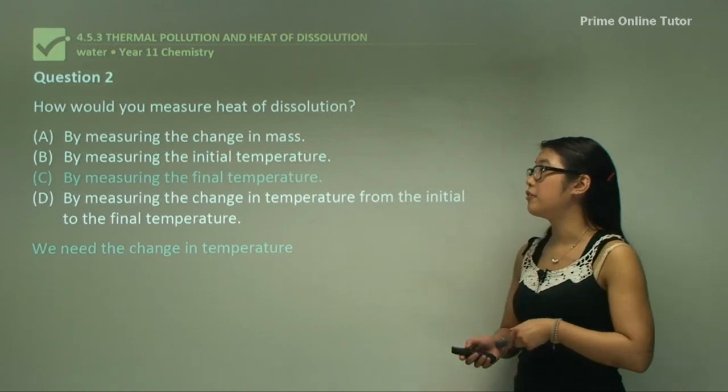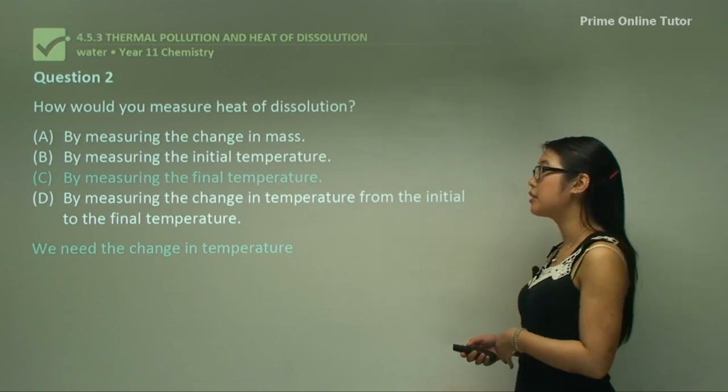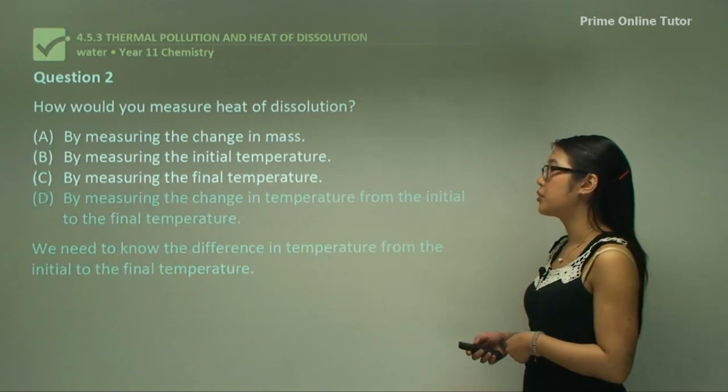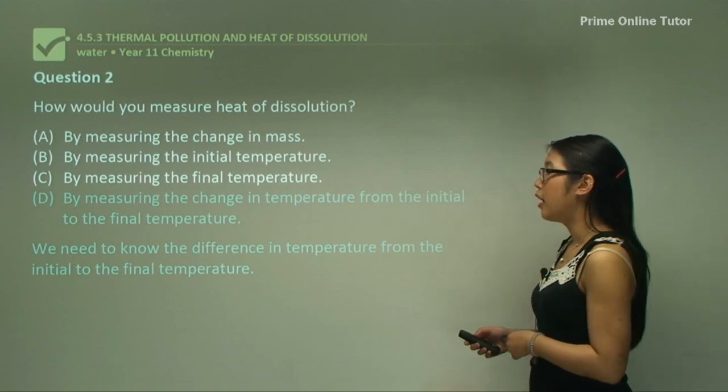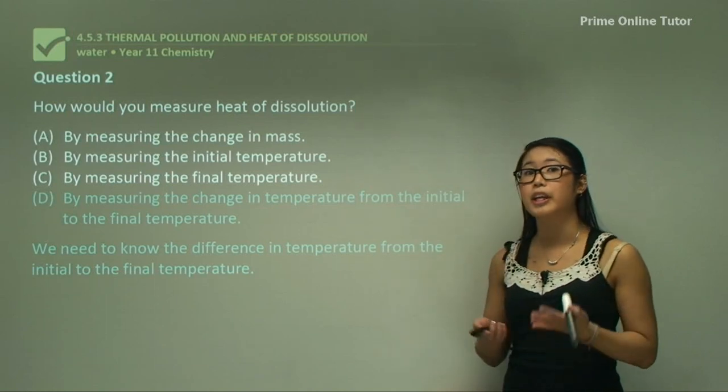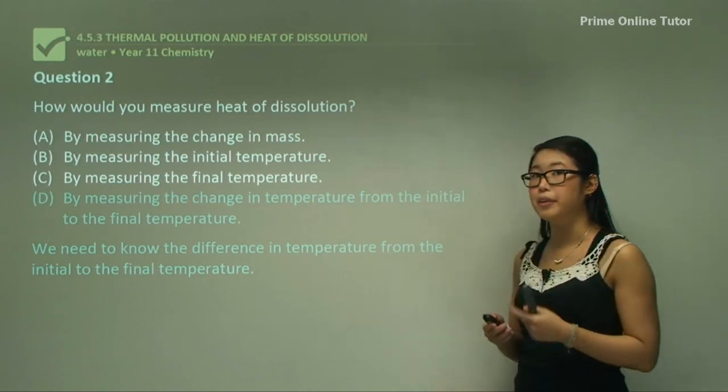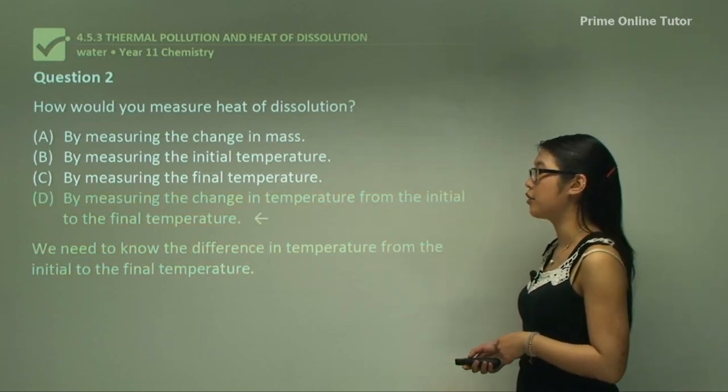C, by measuring the final temperature. Again, for the same reason, we need two sets of measurements and then have the difference. Or D, measuring the change in temperature from the initial to the final temperature. Yes, we need to know the difference between them because the equation requires a change in temperature or enthalpy. So that means we need to know the initial and the final. So D is correct.